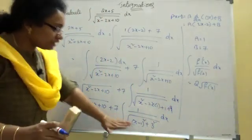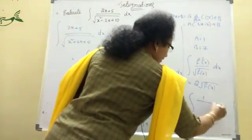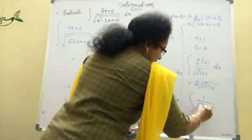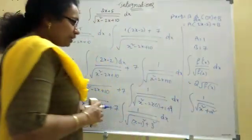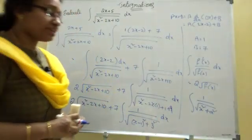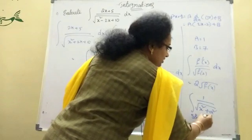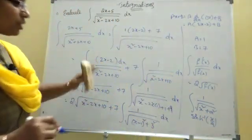And this is the formula. Integration of 1 by root of 1 by root of x square plus A square, sinh inverse x, sinh inverse of x by A. That is the formula.